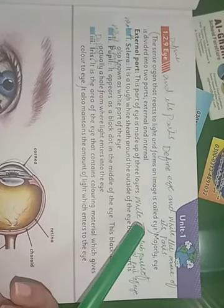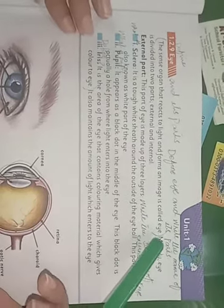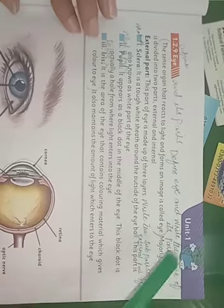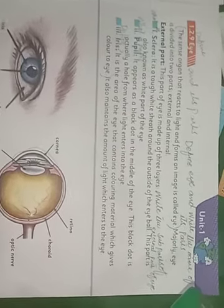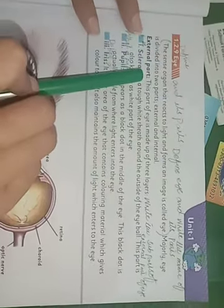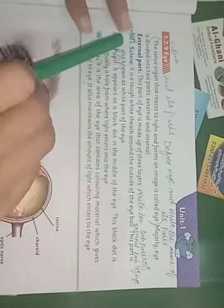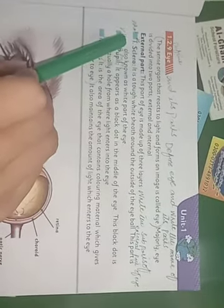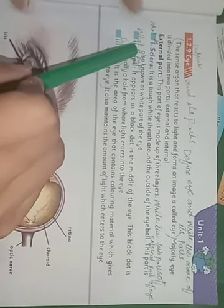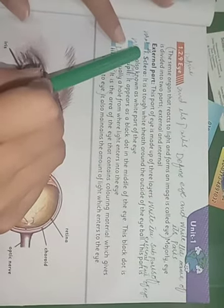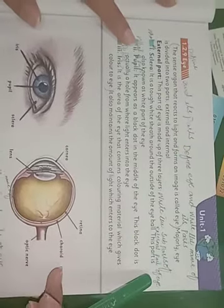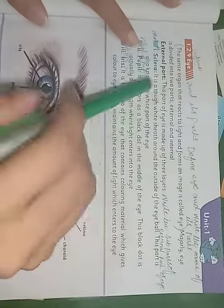When light falls on the eye, an image is formed inside it — this is called the eye. It has two parts: the external part, which is the part that is visible to us from outside, and the internal part. The external part is what we can see from the outside. Now let's write the sub-parts of the external part.